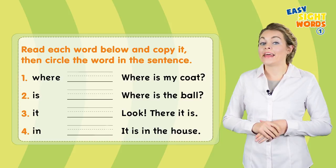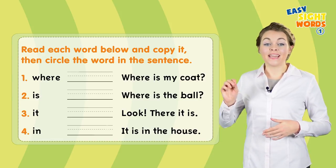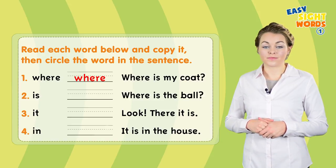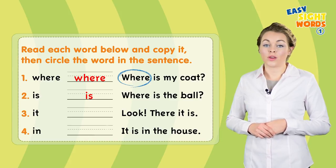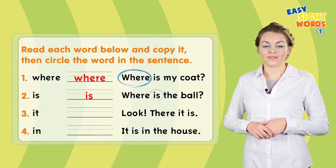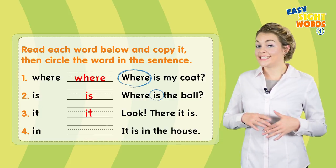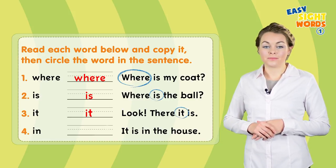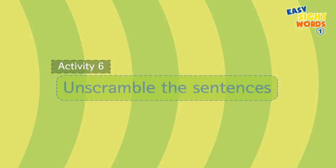Read each word below, copy it, and then circle it in the sentence. Number one: where — say it as we're writing. Now circle it in this sentence: where is my coat? Number two: is — where is the ball? Three: it — look, there it is. Go ahead and circle it. Four: in — it is in the house.